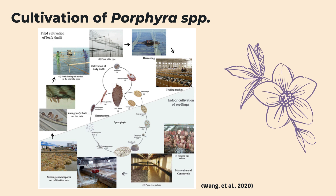After that, the nets are then ready to be hung on the raft in the cultivation area. In the field cultivation of leafy thalli, the semi-floating raft method or the fixed pillar method are widely used. Overall, the first harvest occurs after a growth period of about two months, and several harvests are done through April or May of the following year. The harvested Porphyra are then processed into commercial end products.